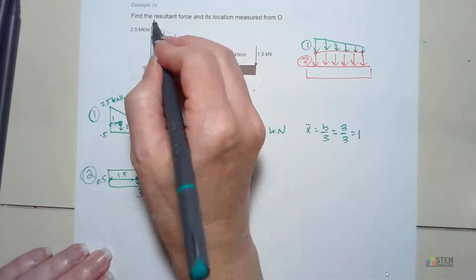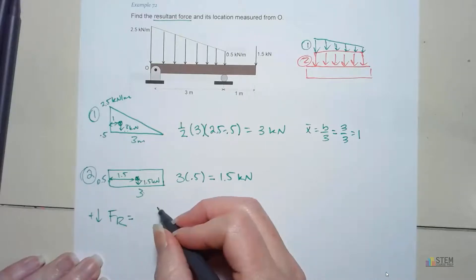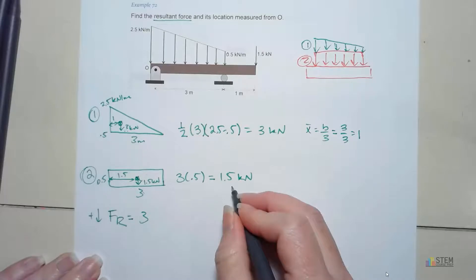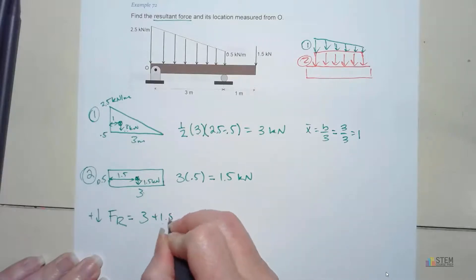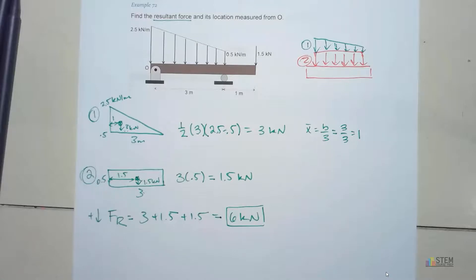Now we want to find the resultant force for the whole system. Okay, so we've got this force and this force. We also have this one here. Our resultant force then, I'm going to say down is positive because everything's pointing down, is going to be the 3 plus the 1.5 plus this 1.5. And then that's going to give you 3 plus 3, which is 6 kilonewtons. That is your resultant force for that whole system.